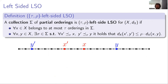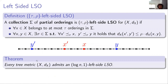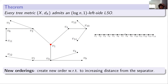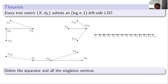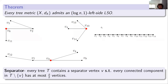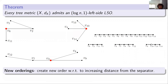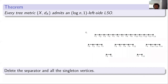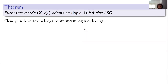Before explaining why this definition is useful, let's show we can construct these objects. Every tree admits a (log n, 1)-left-sided LSO, and the construction is simple. Take a tree, find a centroid separator — a vertex whose removal makes every connected component of size at most n/2. Construct an ordering where position corresponds to distance from the separator: the separator comes first, then the closest vertex, and so on up to the farthest. Now delete the separator and find separators in each connected component, constructing orderings with respect to them. Remove those separators and continue recursively. Each vertex belongs to at most log n orderings, since the connected component size halves each time.